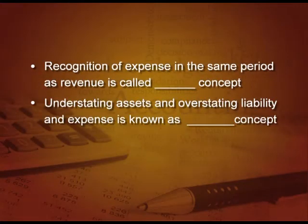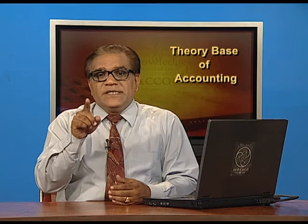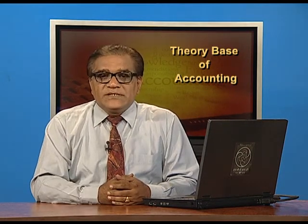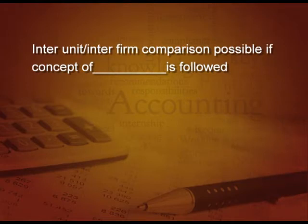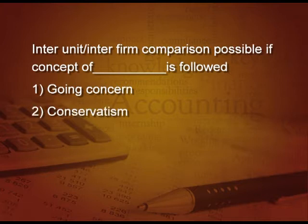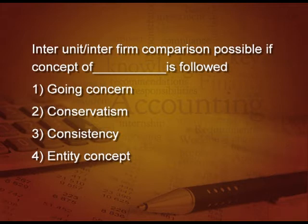Understating assets and overstating liabilities and expenses is known as which concept? Where you are stating assets at less value and liabilities at more value — which concept is that? It is conservatism, because we record assets like stock at cost or market price whichever is lower, so we are stating assets at a lower level. Inter-unit or inter-firm comparison is possible only if which concept is followed? Yes, it is the consistency concept.